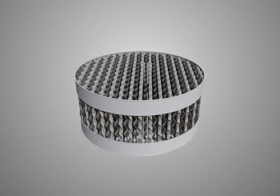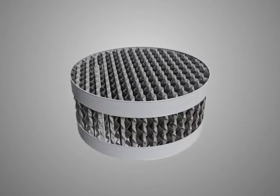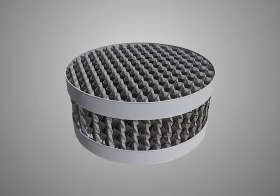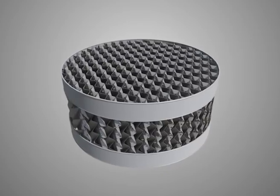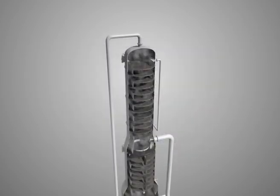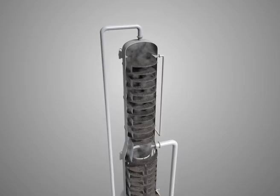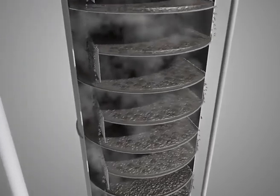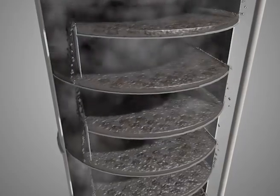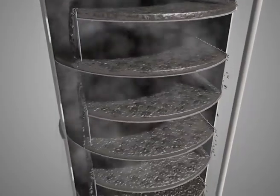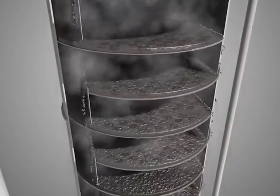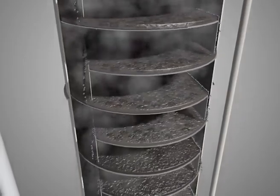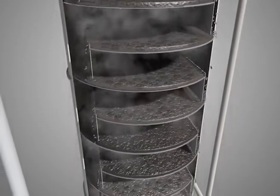Trays consist of a tray deck, downcomer, and outlet weir. In the operation of a typical cross-flow tray, liquid enters the tray at one side and flows across the tray toward a downcomer at the opposite side of the tray. As the liquid flows across the tray, vapor passing through the perforations in the tray surface forms a froth on the tray surface, which allows mass transfer to take place.